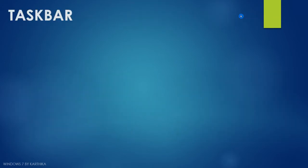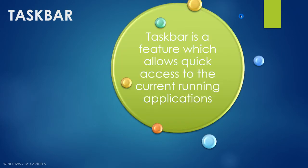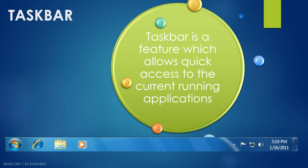Next we are going to learn about the taskbar. The taskbar is a feature which allows quick access to the current running applications. The taskbar is a bar available at the bottom of the screen. On the left side we have the start button, and these are all the default applications pinned to the taskbar automatically.